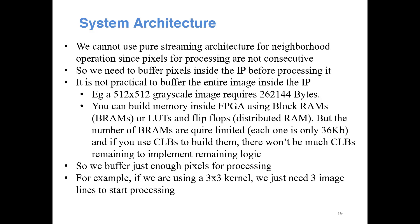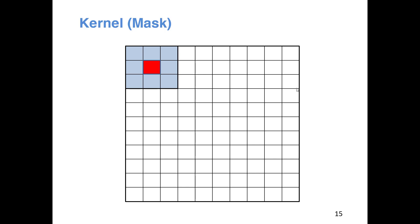So practically we will never buffer an entire picture inside the FPGA unless the picture is really small. Instead, we buffer only the part of the image necessary for processing. For example, if we are using a 3×3 kernel, buffering three lines of the image inside the FPGA is enough to start processing. We buffer those three lines, do the convolution using the kernel, and keep moving the kernel until we finish those three lines. After that, we fetch the fourth line from external DDR.